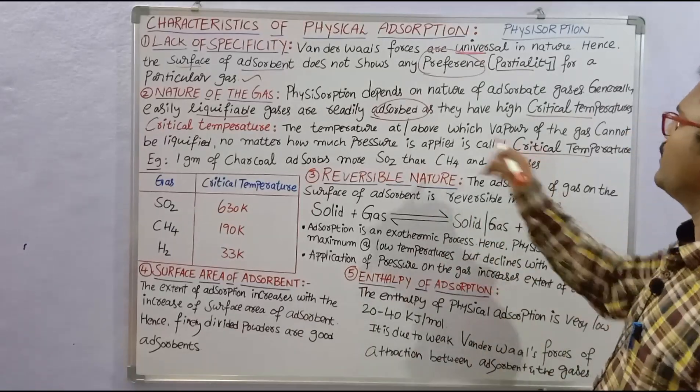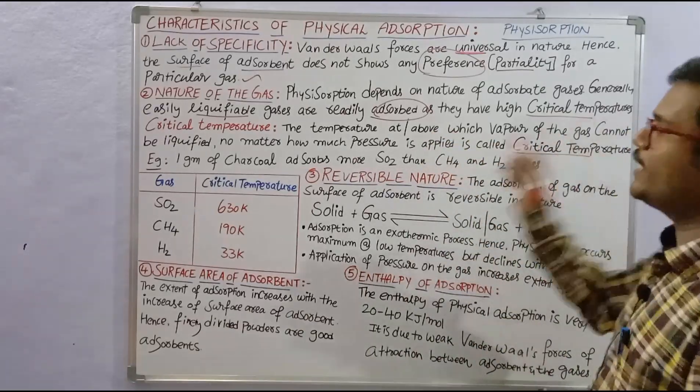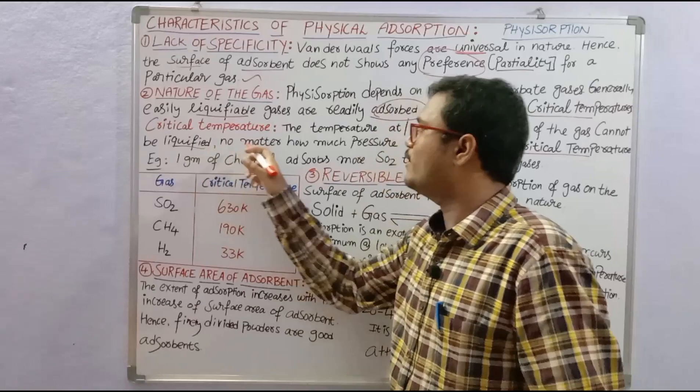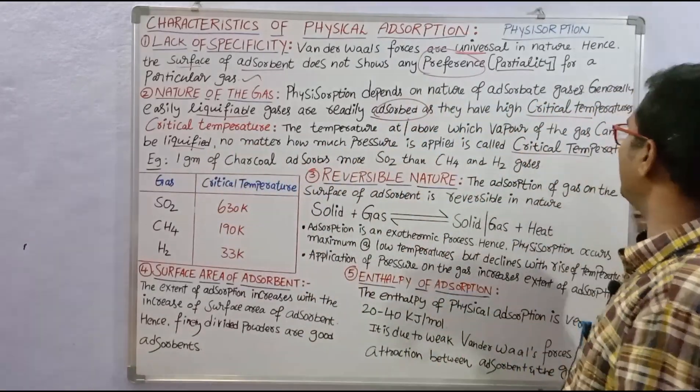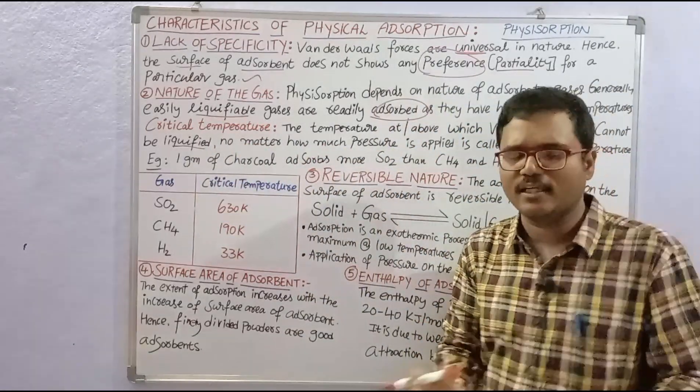Critical temperature is the temperature at or above which the vapor of a gas cannot be liquefied, no matter how much pressure is applied. It is called the critical temperature.